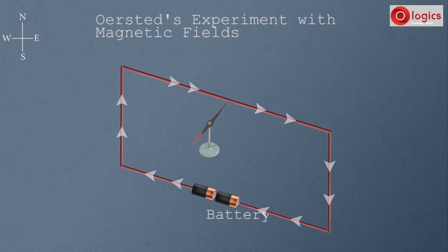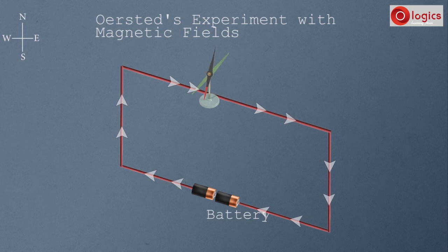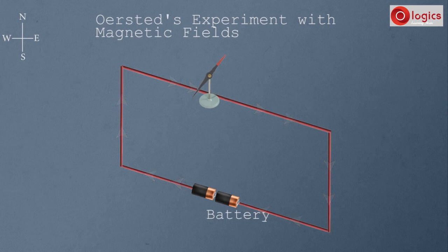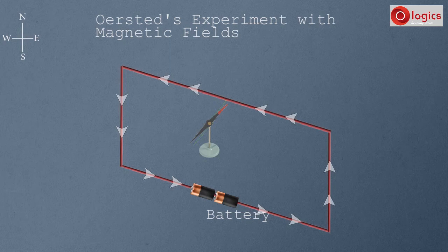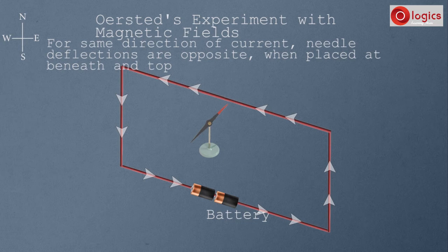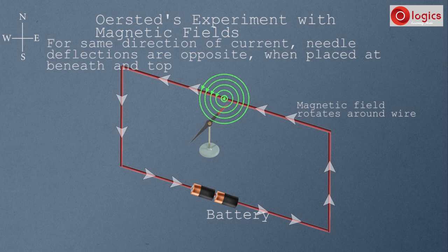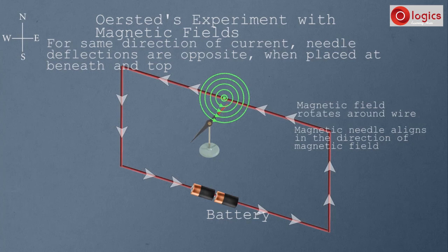Now place the magnetic needle above the wire and observe. It changes its direction, even though the current direction has not changed. Now change the direction of current — again the needle changes its direction. The observation is that for the same direction of current, needle deflections are opposite when placed beneath and on top of the wire. This is explained by the fact that the field direction rotates around the wire, and the magnetic needle deflects to align itself in the direction of that magnetic field.